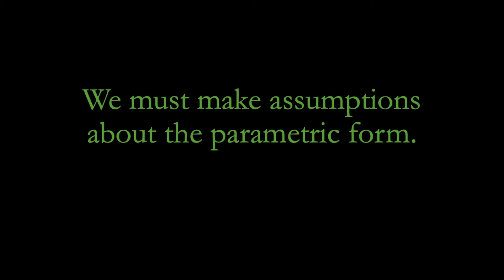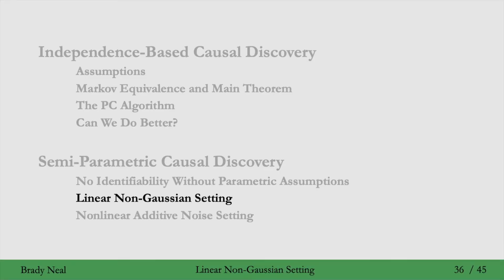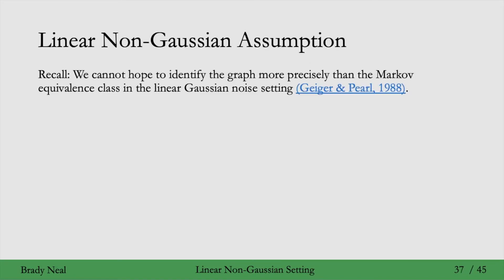The first class of assumptions we'll make is that our structural equations are linear with non-Gaussian noise. Recall that we cannot hope to identify the graph more precisely than its Markov equivalence class in the linear Gaussian noise setting, but that setting seemed oddly specific. What if the noise is non-Gaussian, for example?